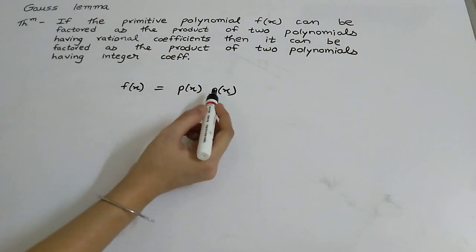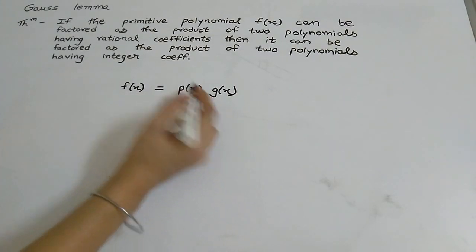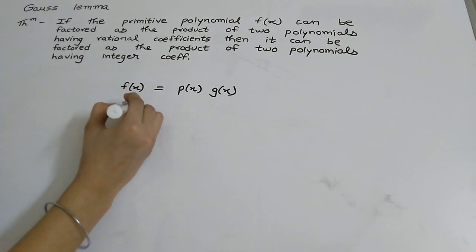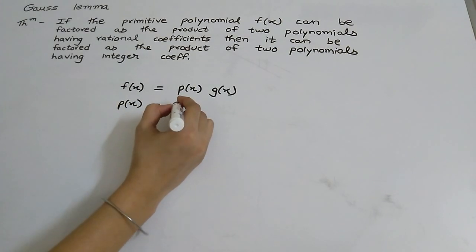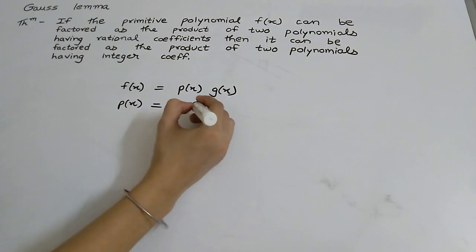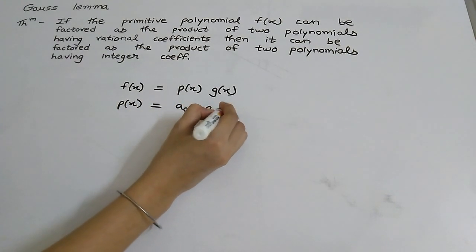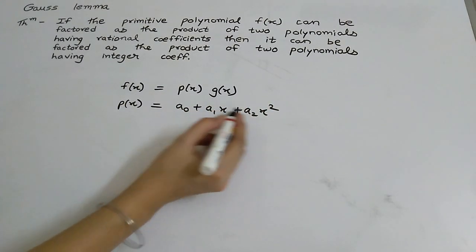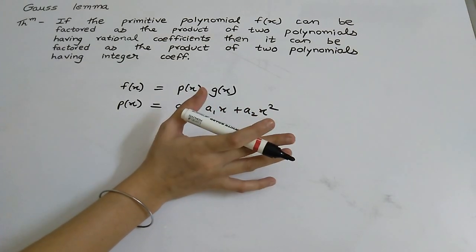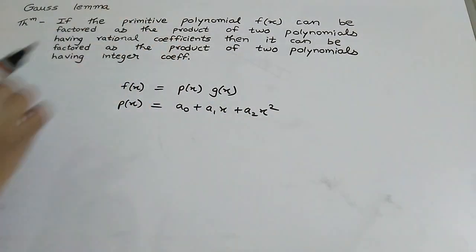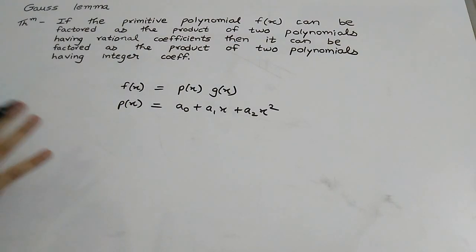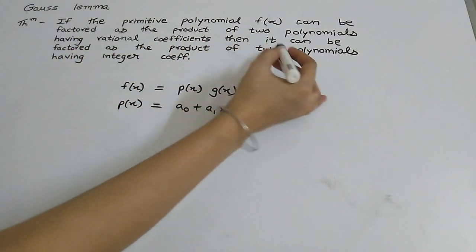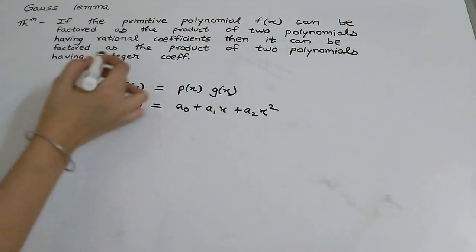Here p and q are polynomials having rational coefficients. This means p is a polynomial of the form a₀ + a₁x + a₂x² and so on. Here a₀, a₁, a₂ will be rational because we are talking about rational coefficients. Now we have to show that f(x) can then be factored as the product of two polynomials having integer coefficients.